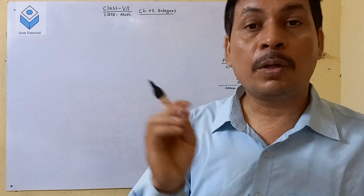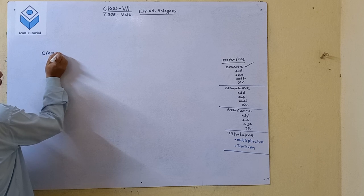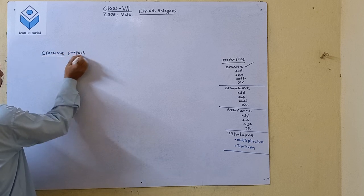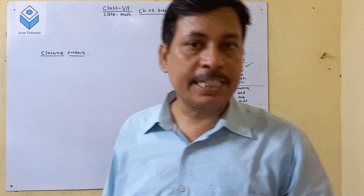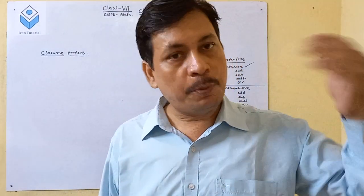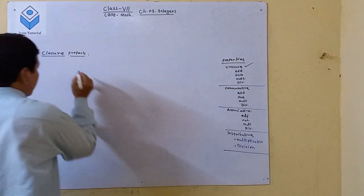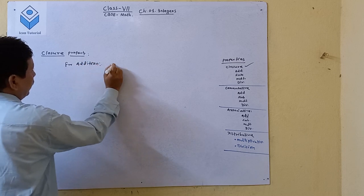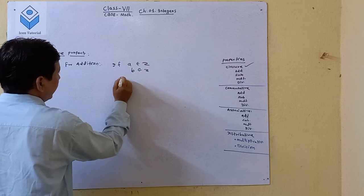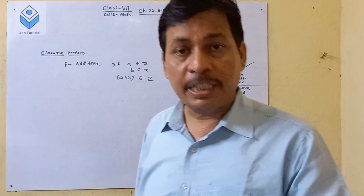What are the closure properties? Let me explain. Closure property for addition: if A is an integer and B is also an integer, then A plus B is also an integer. This is the closure property of integers for addition. If A belongs to Z and B belongs to Z, then A plus B belongs to Z.